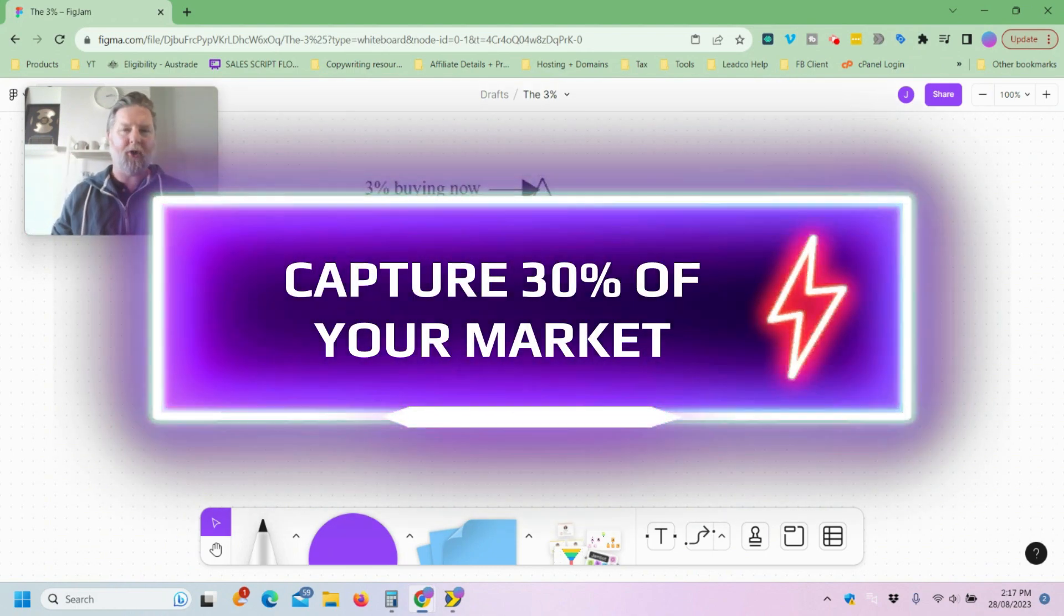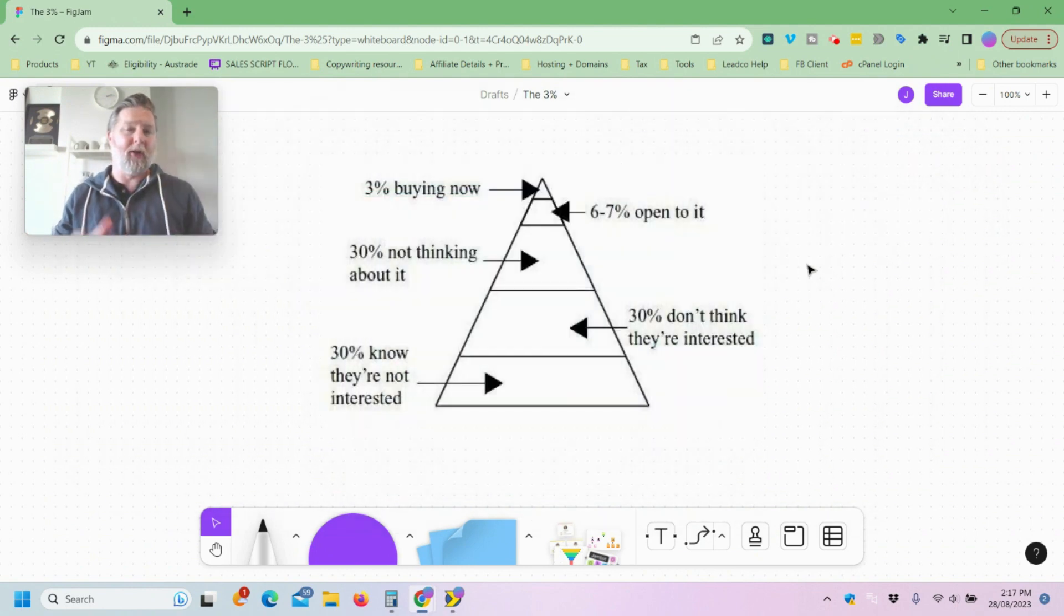If you're a high ticket affiliate marketer, coach, course creator, or anyone that sells anything online, you need to know this one very small stat. And that stat is that there's only around 3% of the marketplace that are willing, ready and able to make a purchasing decision in the immediate future.